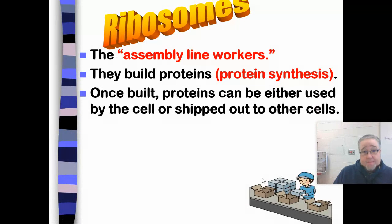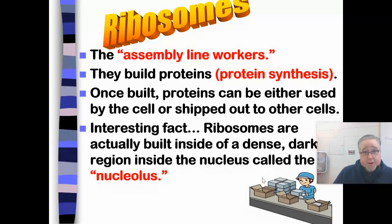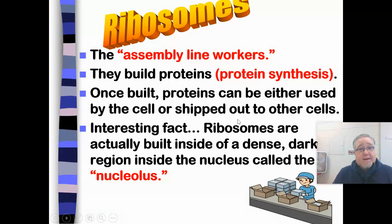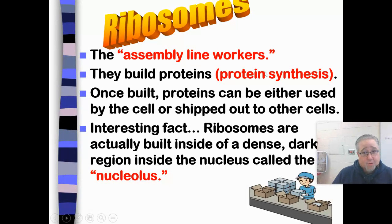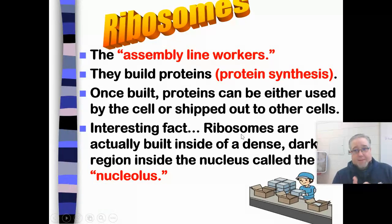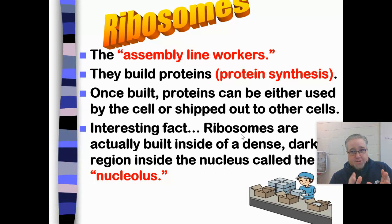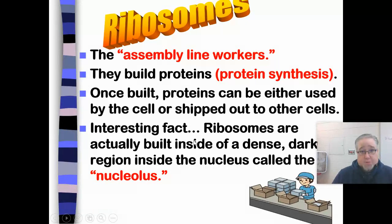We finished up the first video talking about ribosomes. Ribosomes are the assembly line workers — they're the ones that actually build the proteins through a process called protein synthesis. So up to this point, we've talked about the mitochondria, the nucleus, and the ribosomes, which are actually building those proteins, which is a really important thing.